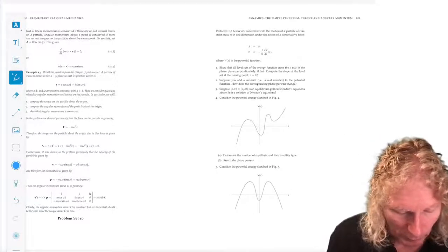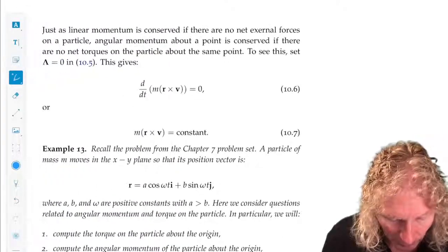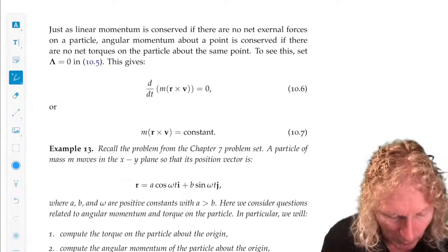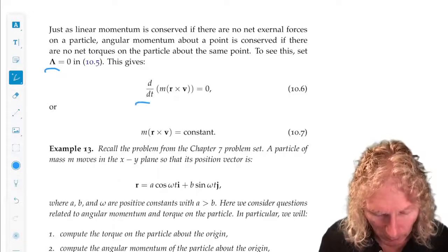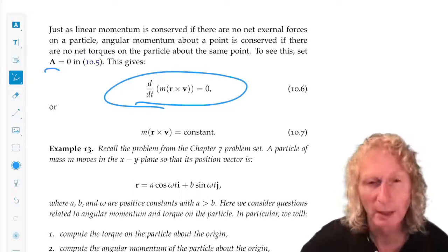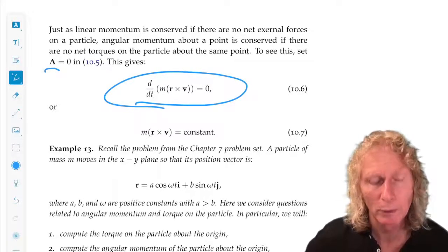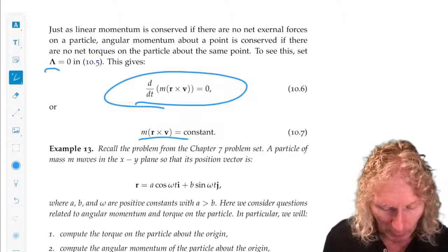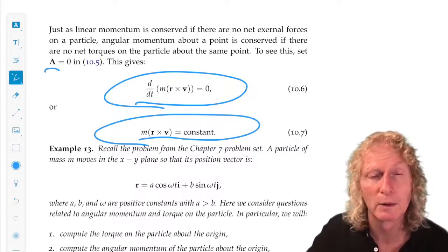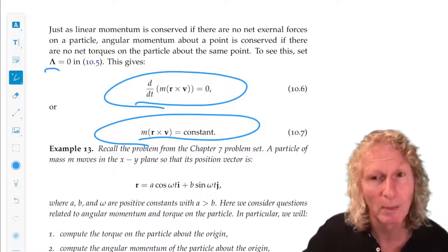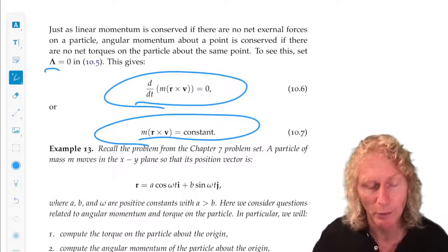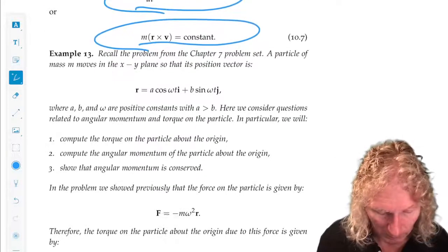So you can guess that we have a conservation law. When there is no torque, torque equals zero, we have d by dt of the angular momentum equals zero. And the angular momentum therefore is constant when there is no torque about this particular point. That's very important.